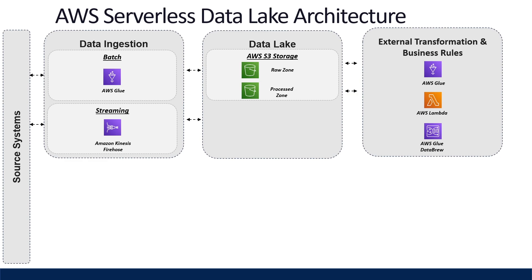Now that we have data in various zones in our data lake, we need a way to know where all our data is and what the dataset schemas are, so we don't let our data lake become a data swamp. Within the AWS Glue service, we can use Glue Crawlers to discover the data in our various S3 buckets and write this information to the AWS Glue Data Catalog. Glue Crawlers make it easy to discover all of this with no development time needed. When your data is crawled, the metadata written to the Glue Data Catalog includes the S3 bucket and object location, the file classification, and schema information about your dataset.